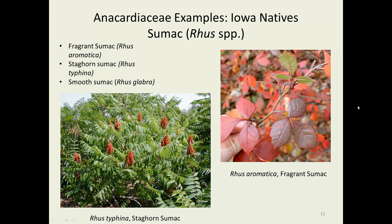Next up, some Iowa natives. Sumac is native to Iowa — there are three or four species: fragrant sumac, staghorn sumac, and smooth sumac. These can also cause contact dermatitis, perhaps not quite as ferociously as poison ivy. Fragrant sumac is a very attractive plant and doesn't tend to runner as badly as the other sumacs. They can be quite a problem if they get into an unmanaged prairie area by spreading through their roots.